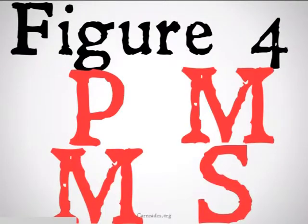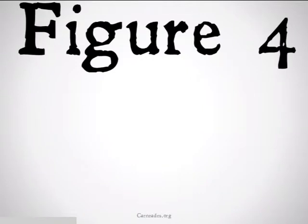Figure 4 looks like this — it has that backwards diagonal to Figure 1 that goes from the bottom left corner to the top right corner. Unlike all the other figures, Figure 4 is going to have only three unconditionally valid forms, and instead of only two conditionally valid forms, three conditionally valid forms.